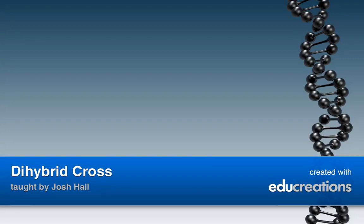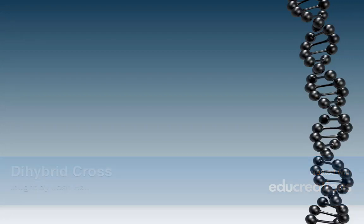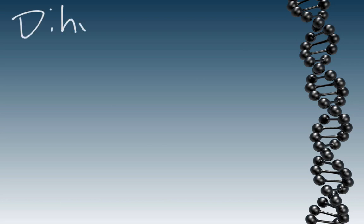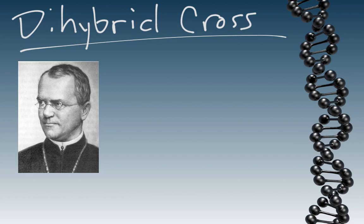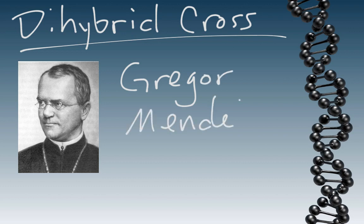In this video, we're going to continue our study of basic Mendelian genetics by talking about what we call a dihybrid cross. We'll start by going back a little bit to the basics and talk about the guy who started it all, Gregor Mendel, who, if you will remember, was a monk, and he worked with pea plants to do genetic experiments. We'll start by looking at exactly how he performed these experiments.